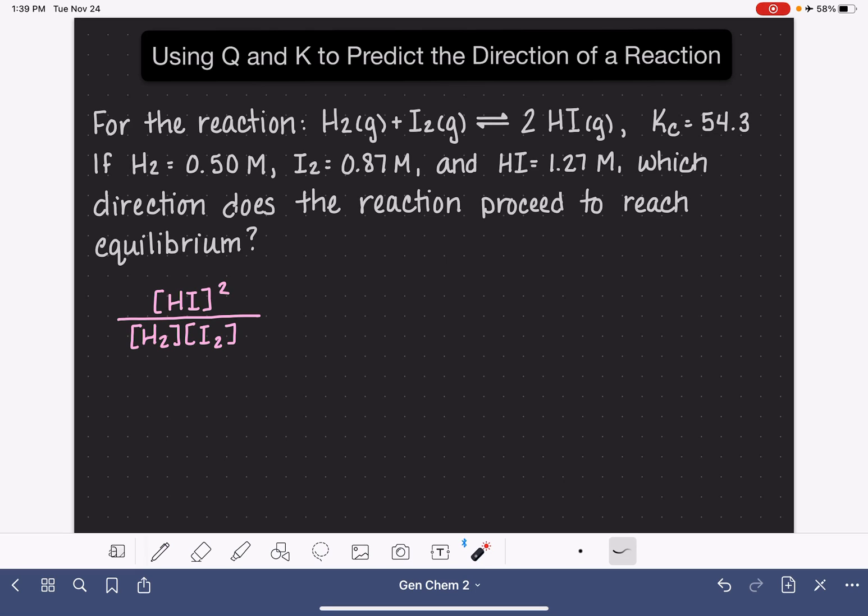Now, if this system is in equilibrium, when we plug in the concentration of HI, the concentration of H2, and the concentration of I2, and we do the math on this, if it is in equilibrium, we're going to get 54.3, the value of the equilibrium constant.